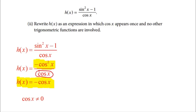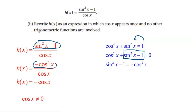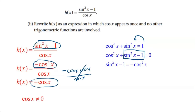To explain where that came from: I used the Pythagorean identity cosine squared plus sine squared equals one. Subtracting one from both sides gives sine squared minus one equals negative cosine squared — which is exactly what I saw in the numerator. Then negative cosine of X times cosine of X in the denominator reduces to just negative cosine of X. I also need to add the restriction that cosine of X cannot equal zero, since it appears in the denominator.